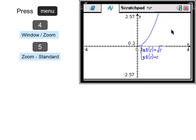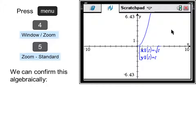Press menu, four, which is window zoom, and five, which is zoom standard, and that squares up our graph. We can confirm this algebraically. If we start with x equals radical t and y equals t, we can substitute in y for t and get x equals radical y.